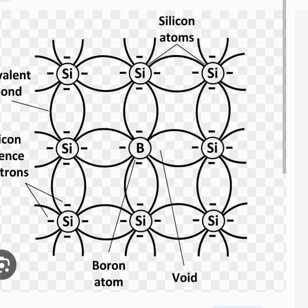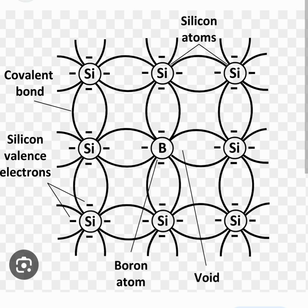Such a process will create many, many voids in the structure, and therefore such material after adding the boron impurity will have many, many holes in the structure. This type of doping process will create a P-type semiconductor, which is called a P-type material.